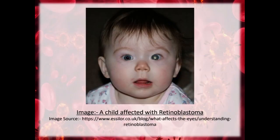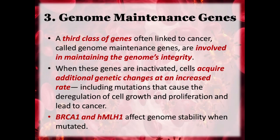Genome maintenance genes. A third class of genes often linked to cancer, called genome maintenance genes, are involved in maintaining the genome's integrity. When these genes are inactivated, cells acquire additional genetic changes at an increased rate, including mutations that cause deregulation of cell growth and proliferation leading to cancer. BRCA1 and HMLLH1 affect genome stability when mutated.